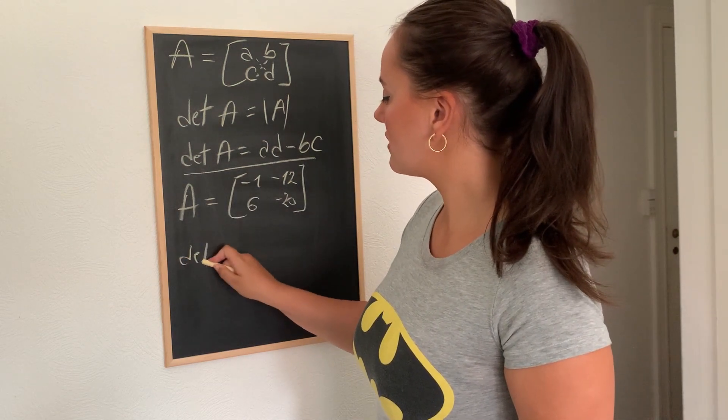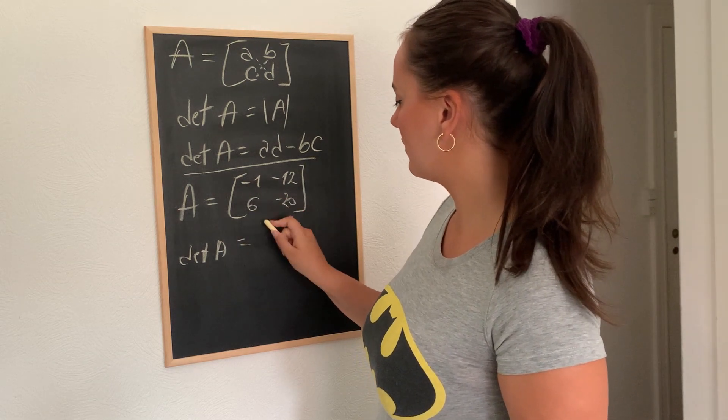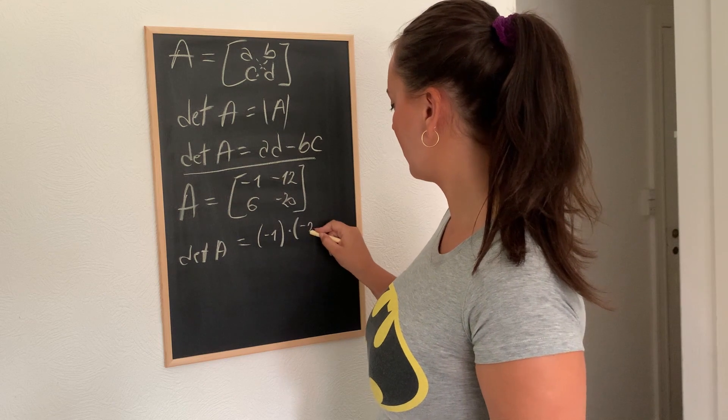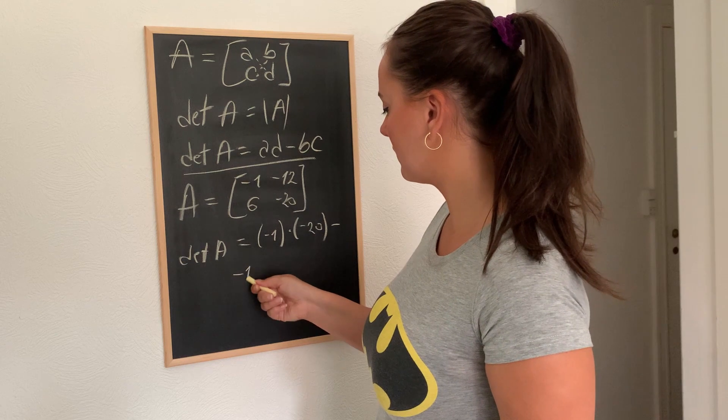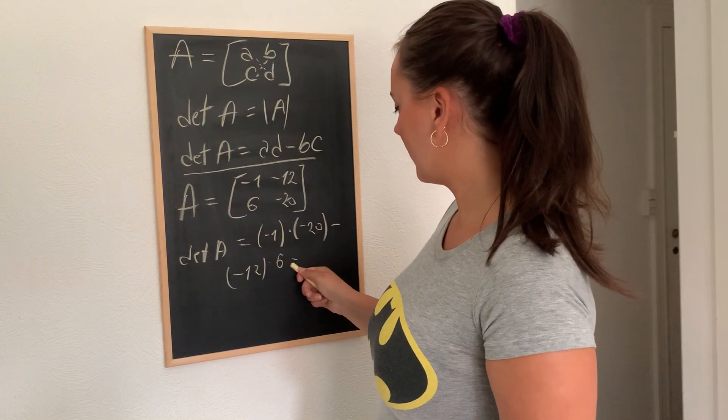Now, let's try to apply this formula on this new matrix. So determinant of A would be minus 1 times minus 20, minus minus 12 times 6.